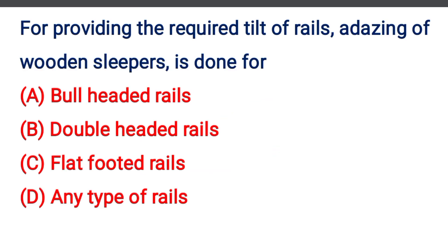Next question: For providing the required tilt of the rails, adzing of the wooden sleeper is done for — Option A: bull headed rails, Option B: double headed rails, Option C: flat footed rails, Option D: any type of rails. The correct answer is Option C: flat footed rails. We will see more in the next video. Thank you.